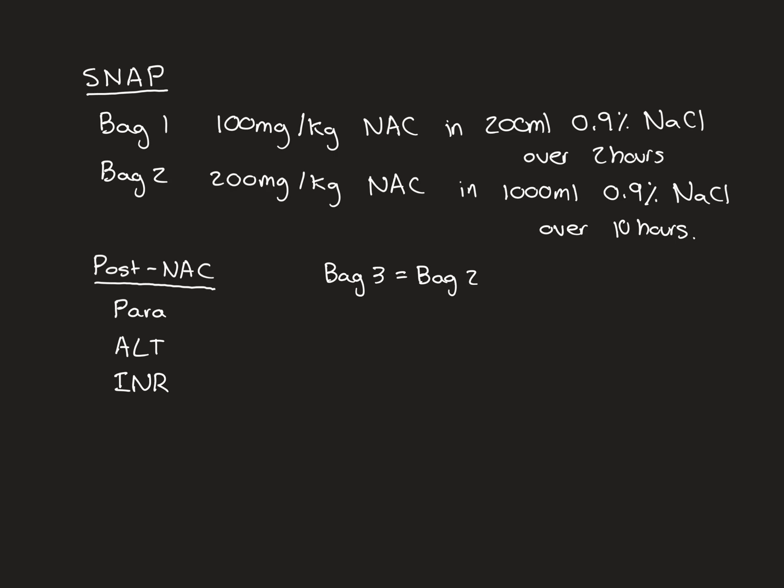Let's now discuss what are the acceptable ranges for these to come back as in the post-NAC bloods. Let's begin with paracetamol. The acceptable range for paracetamol is less than 10 mg per litre. So if you measure the paracetamol level post the second infusion that comes back as less than 10 mg per litre, that is a pass. In my experience, usually this one does pass the test. It usually has come down to less than 10 mg per litre by the time you do these bloods.